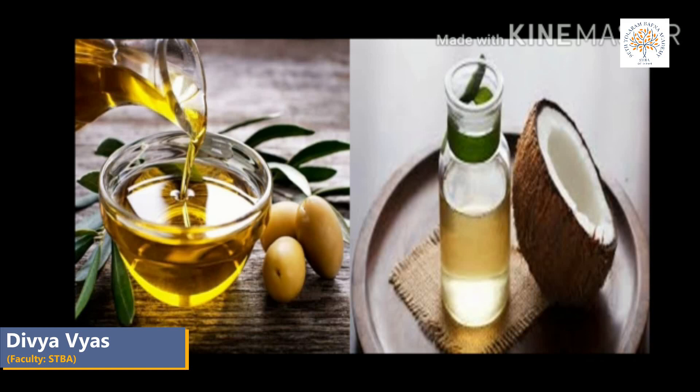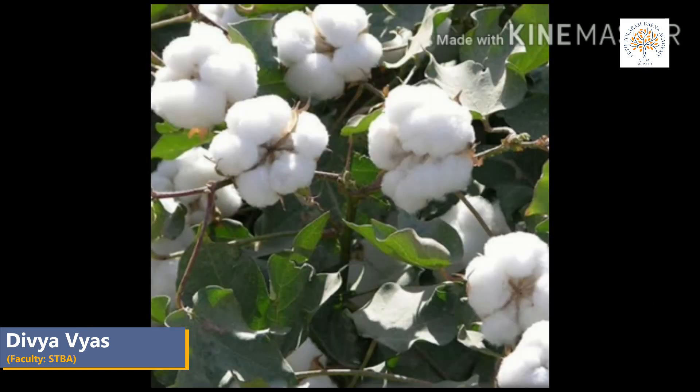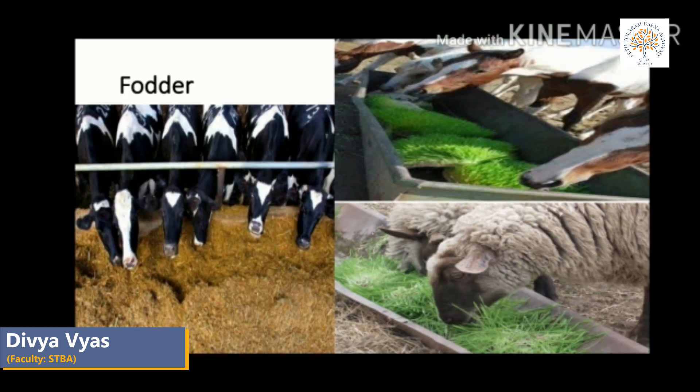Cooking oils include groundnut, coconut, sunflower, and mustard. In Europe, olive oil is used, as olive trees grow in the Mediterranean region. Some seeds such as cottonseed give us oil that is non-edible and cannot be used for cooking — such oils are used to make soaps.